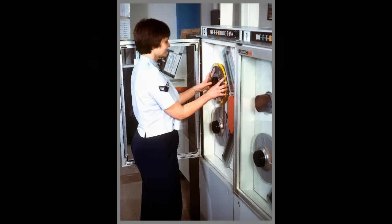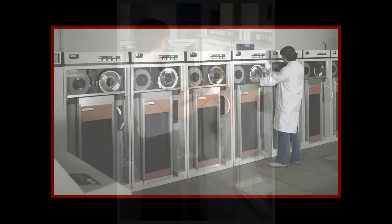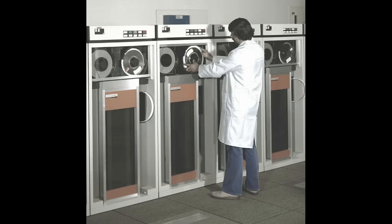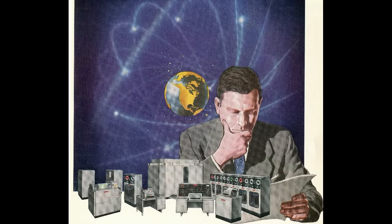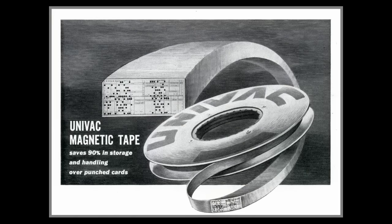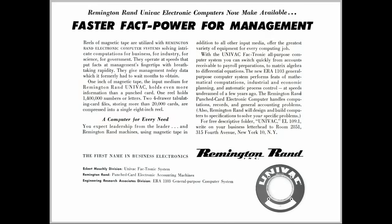Actually, it wasn't until 1951 that magnetic storage tape reels were first used. The first such reels were used on the UNIVAC-1 computer, introduced in 1951. The UNIVAC-1 was developed by the Eckert-Mauchly Computer Company, which later became the UNIVAC Division of Remington Rand.